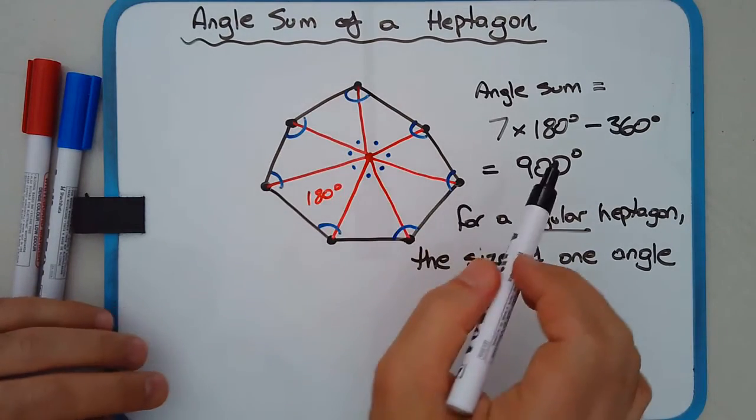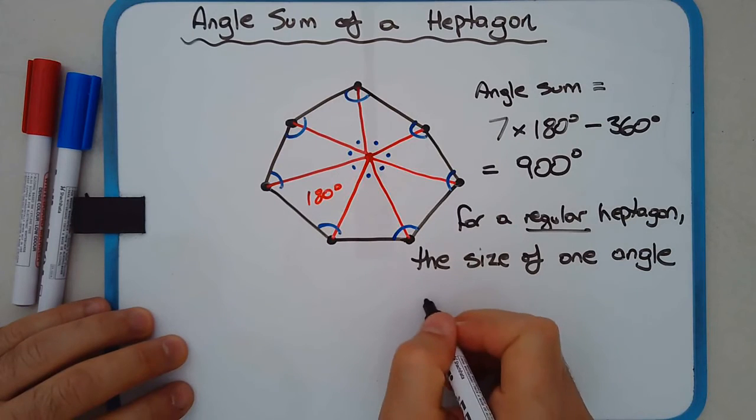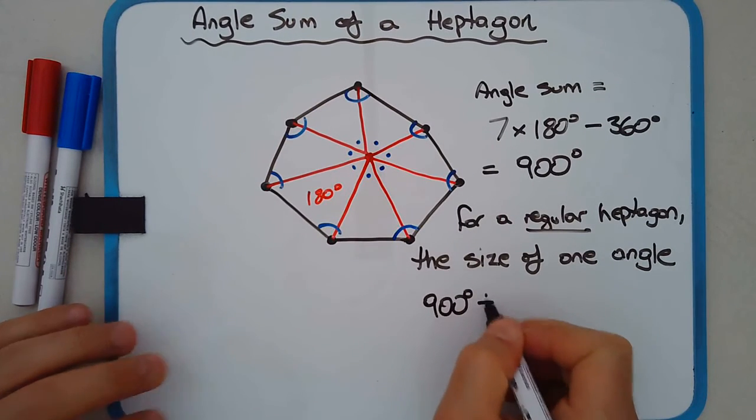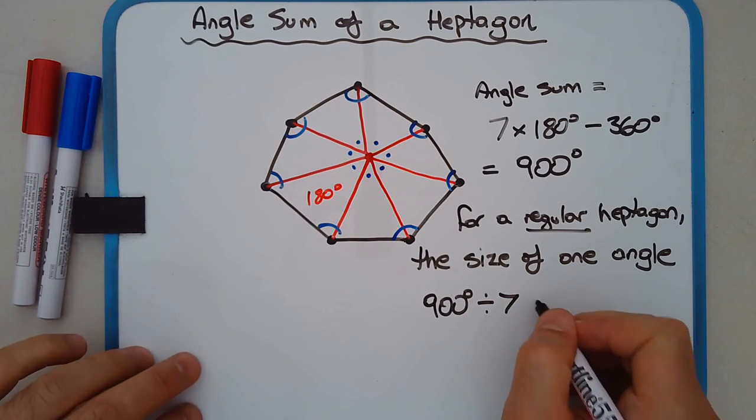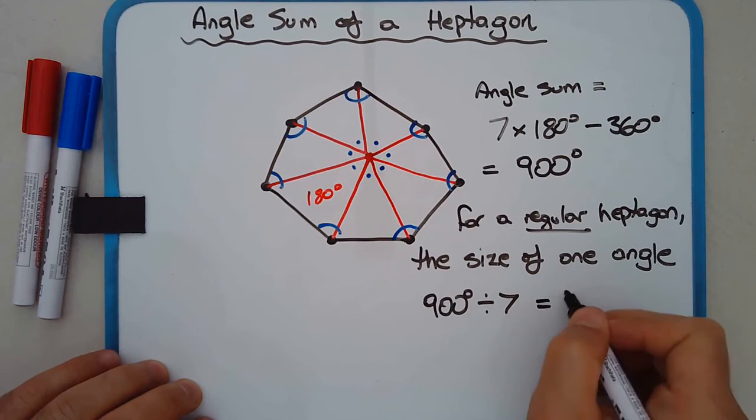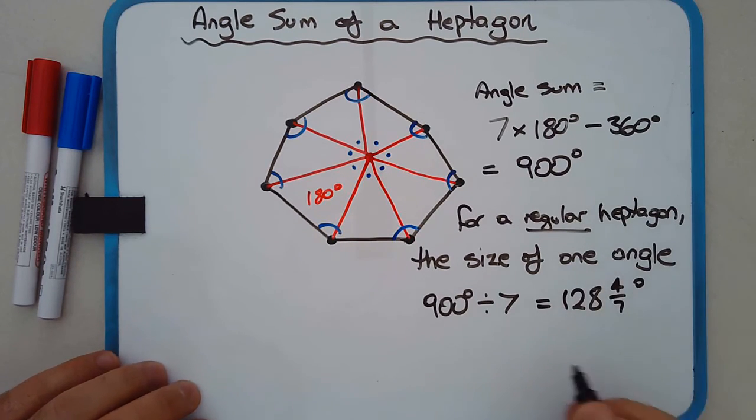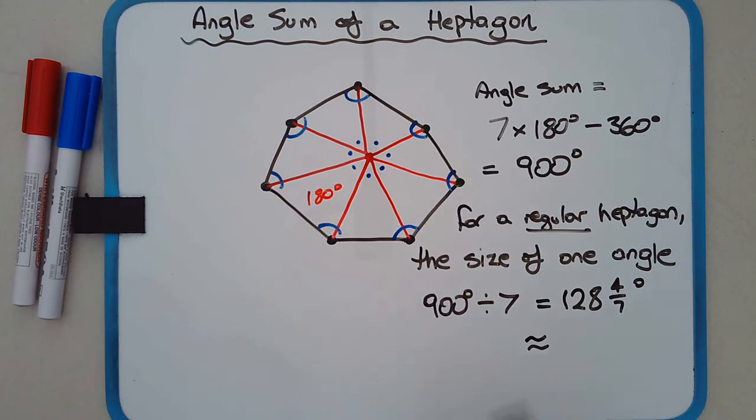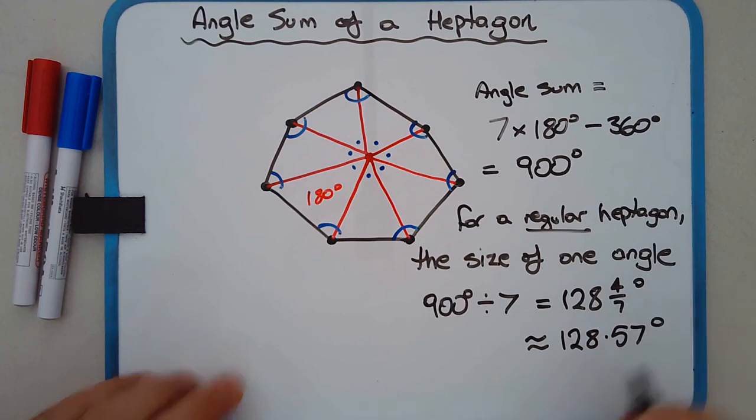Well, we've got seven angles, and the total sum is 900 degrees. Divide that by seven, and we get roughly 128.57. In fact, I'll express the answer in exact form first. So it's in fact 128 and 4 sevenths of a degree, which is roughly 128.57, correct to two decimal places.